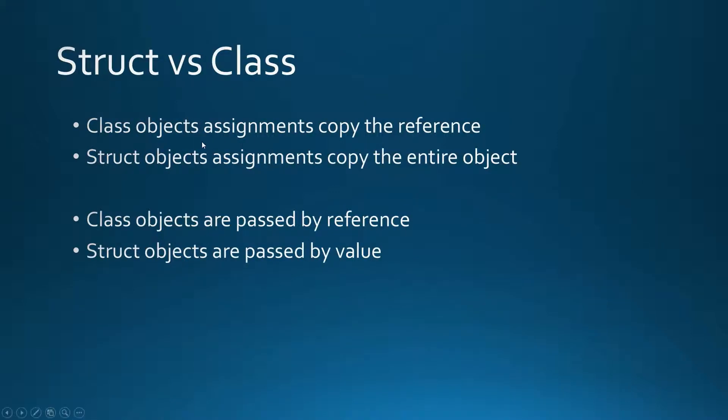Class object assignments copy the reference and struct object assignments copy the entire object. Let's see what this means on a practical example.